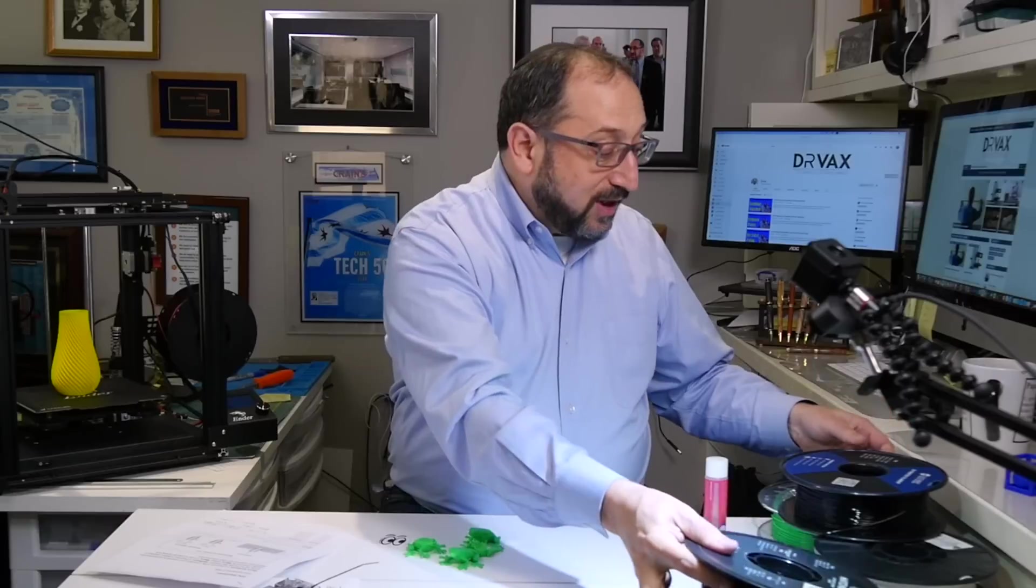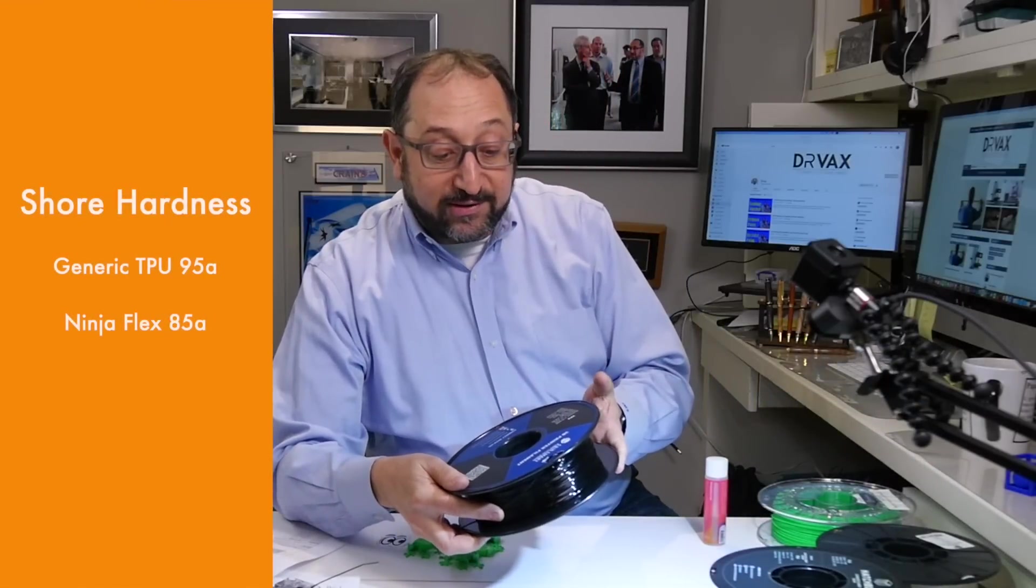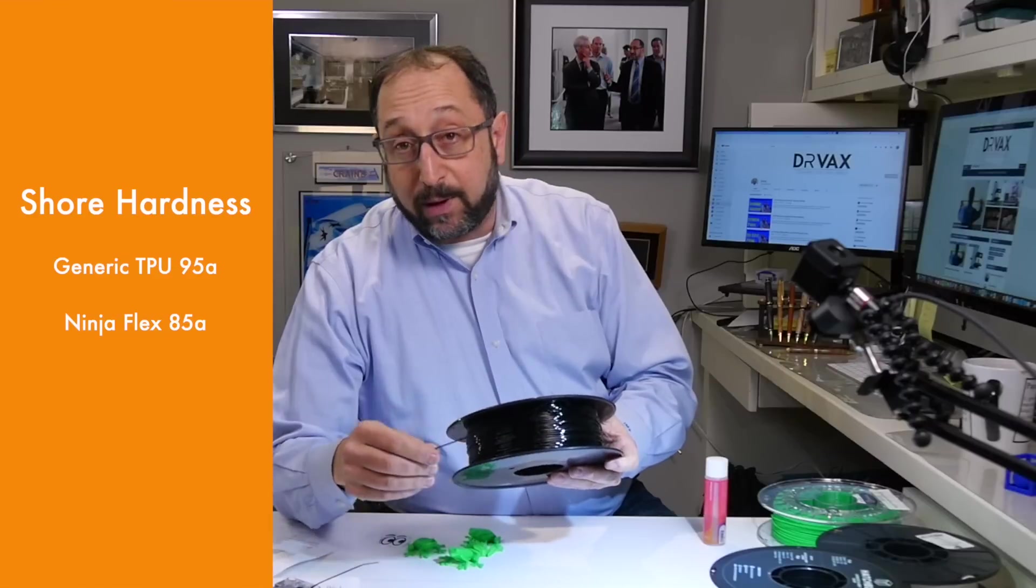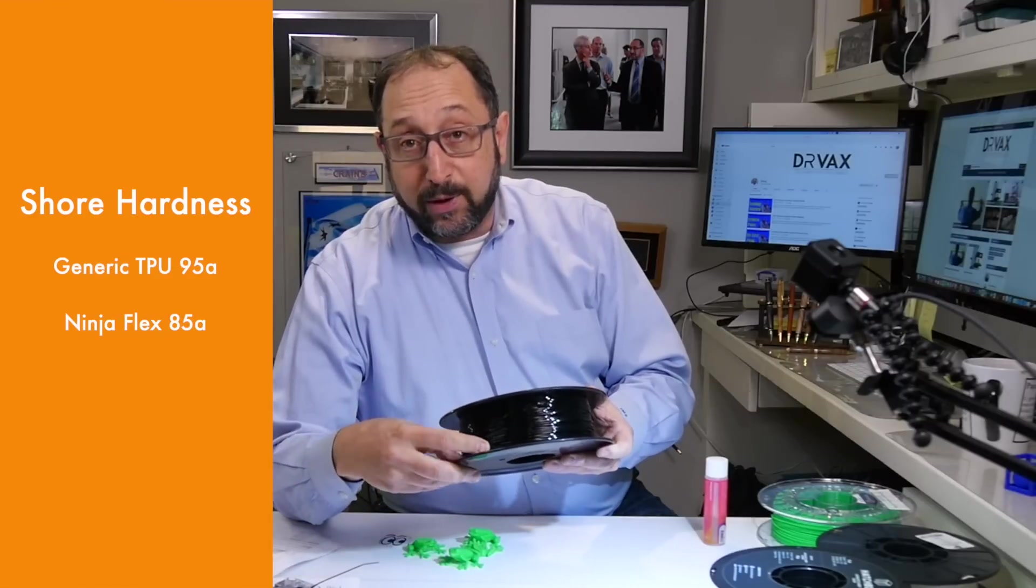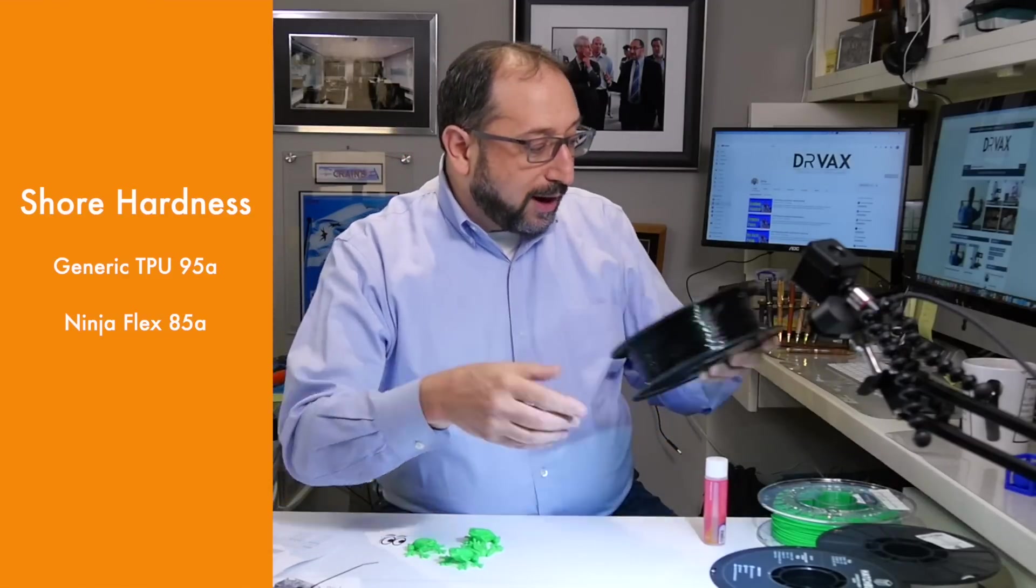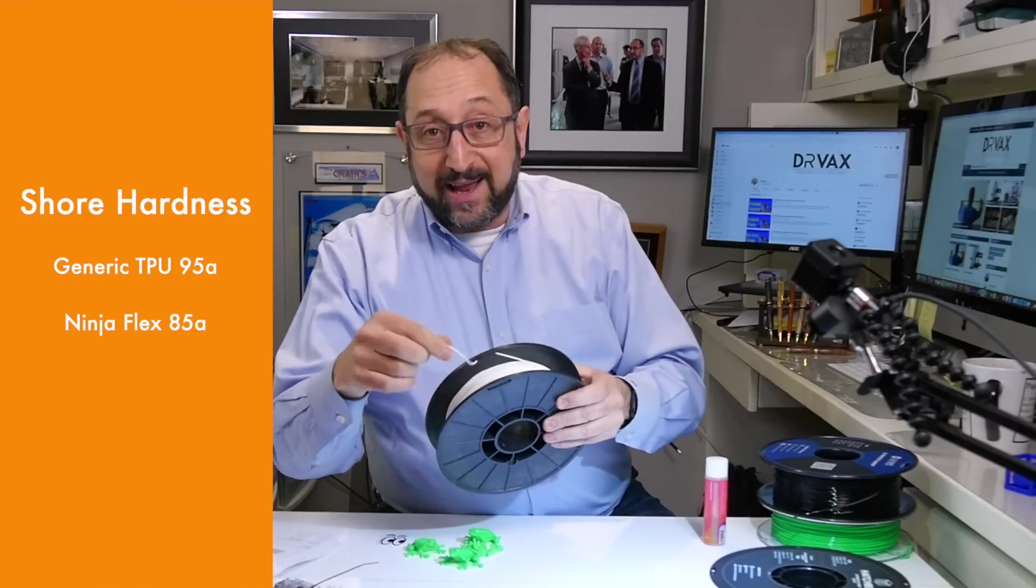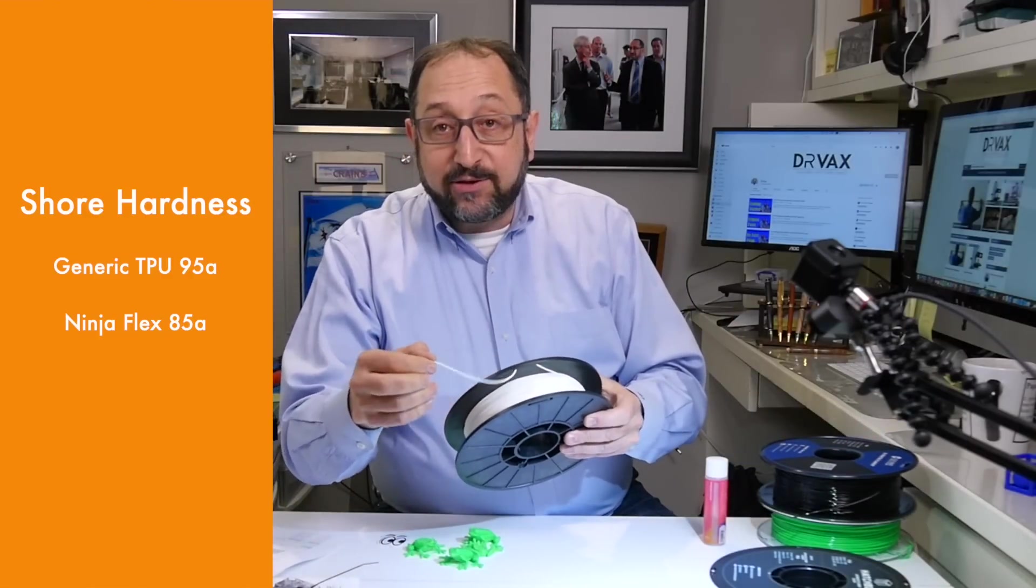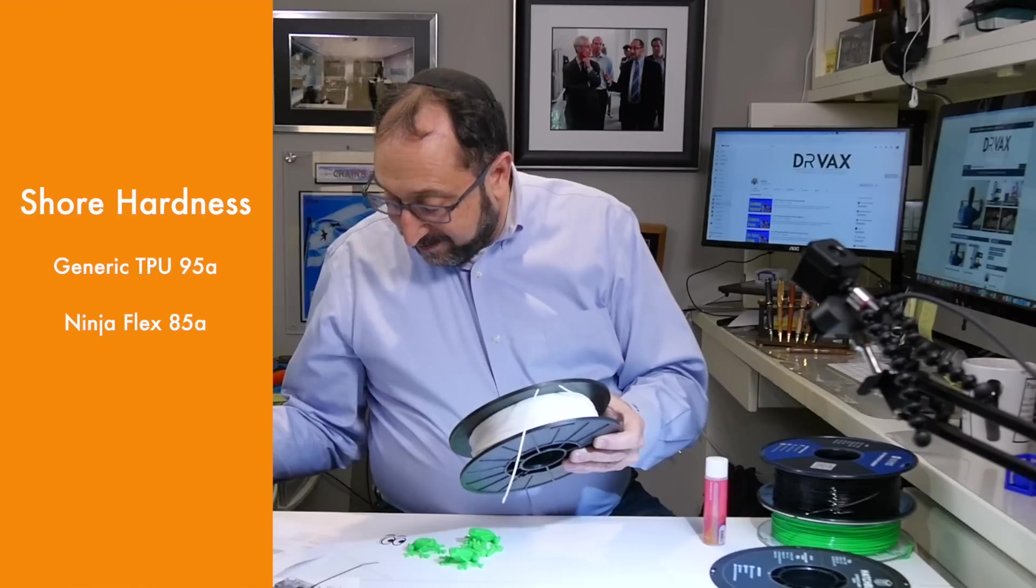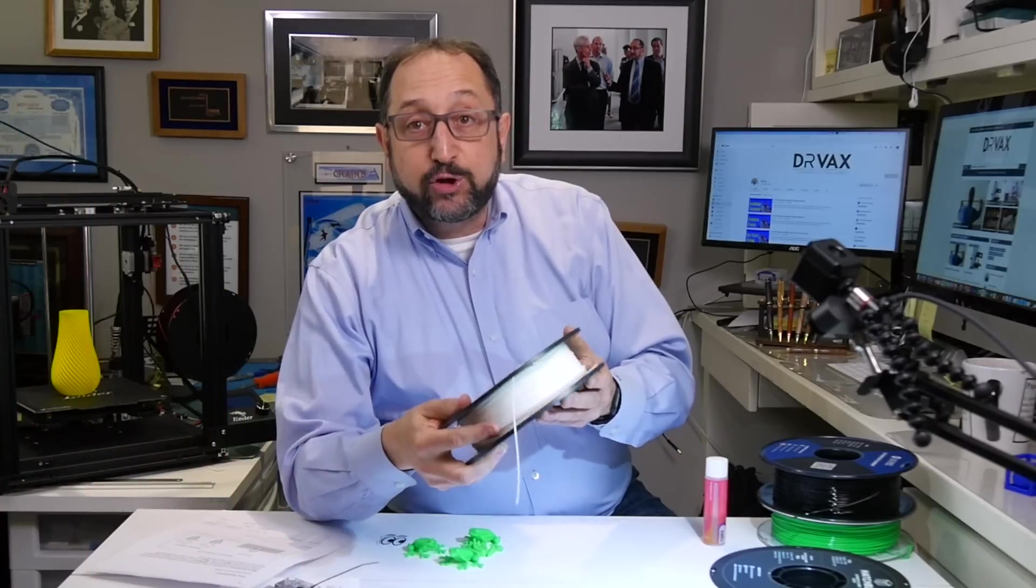Now, most of the filaments that we print with are generally relatively hard. As an example, a standard TPU, this is a SainSmart TPU. It's one of my favorite TPUs because it's very easy to print with is about a 90 or a 95 shore hardness. Ninja Flex, which is considered like a wet noodle in terms of hardness, is actually an 80 or an 85 shore hardness.